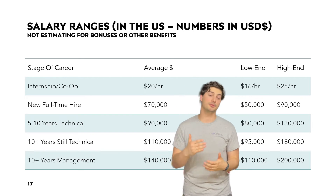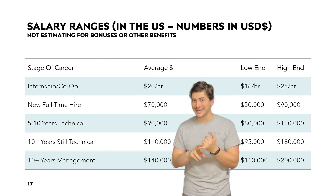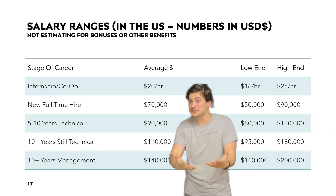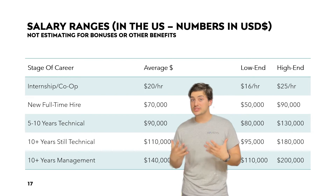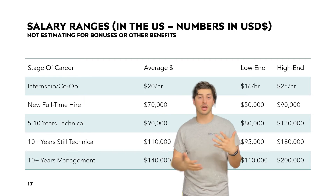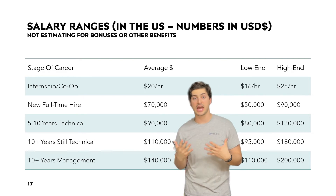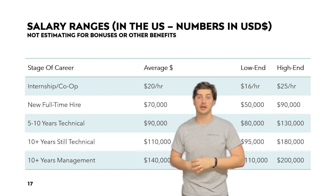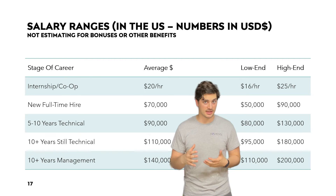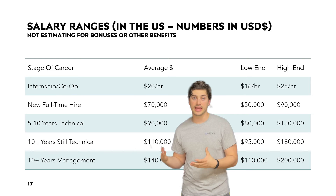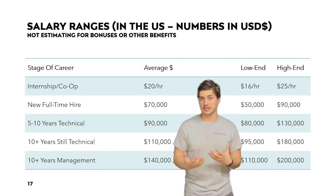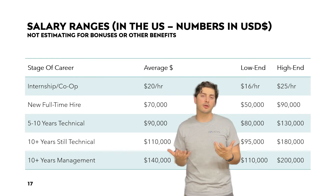Now let's take a look at salaries for controls and automation engineering. I want to caveat this with: I am talking about US-based salaries. Most interns and co-ops in this position are finding paid internships — on the lower end in the Midwest, maybe the lower markets, you might find $16–$17 per hour, but there are internships paying in the high $20s as well. Most new full-time hires right out of school with an engineering degree doing automation and controls can expect to be around the $70,000 benchmark. Once you're mid-career with five to ten years of experience, you're at a decent spot if you're around the $90,000 mark.